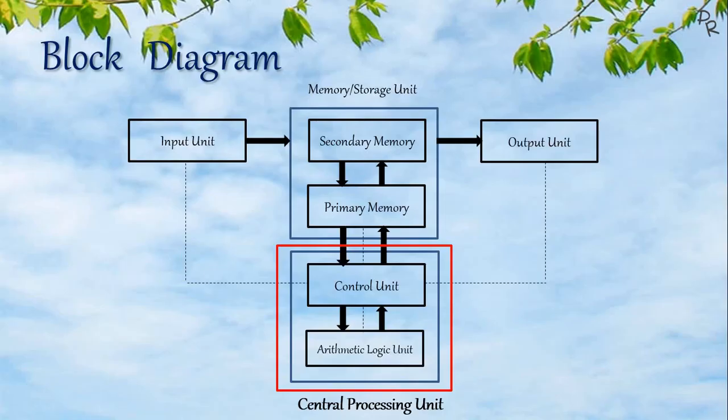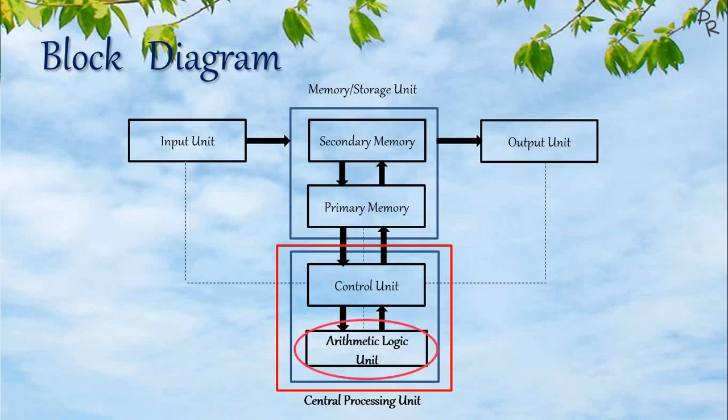Then we have the CPU — the central processing unit, also called the heart and brain of the computer. The CPU comprises two units: the control unit and the arithmetic logic unit. The control unit controls the overall working of the computer system.